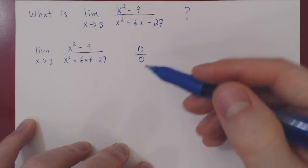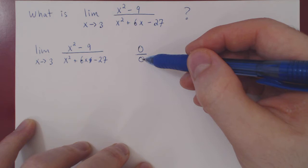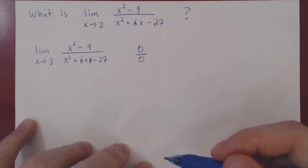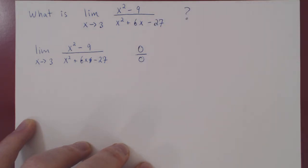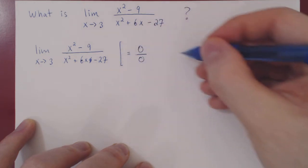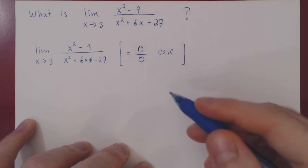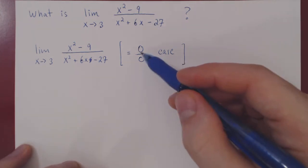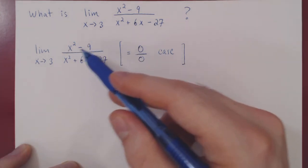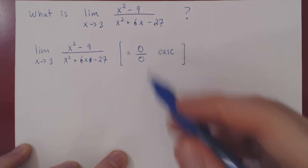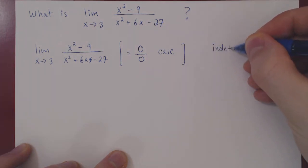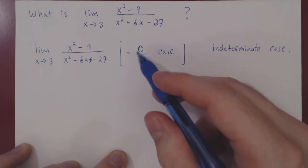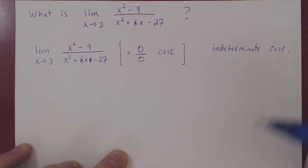So what's going to happen here? It's not clear, as we have something getting smaller and smaller over something that is also getting smaller and smaller. We will use square brackets with an equal sign and write the word 'case' — because 0 over 0 is not a number, it's undefined. This is a so-called indeterminate form, or indeterminate case. Indeterminate because on the surface it's really not clear what the limit is, or even if it actually does exist at all.